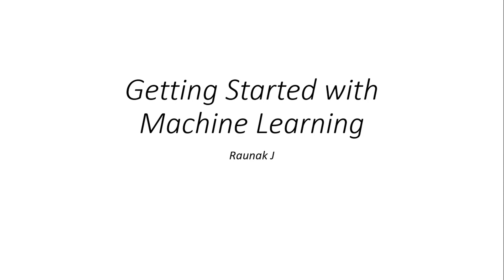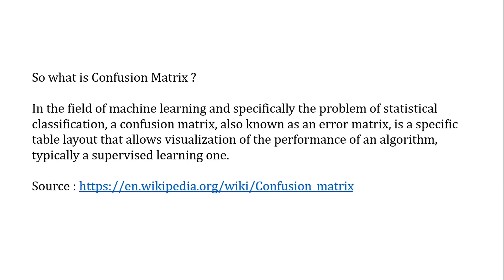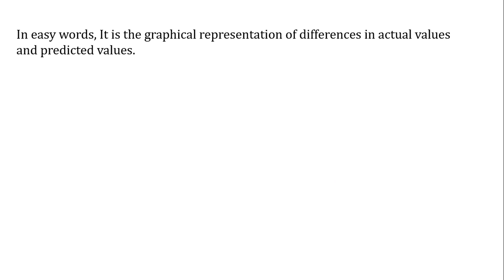Hey everyone, my name is Ronak, back with another video. This is the 13th video in the getting started with machine learning playlist. In this video you are going to learn the confusion matrix. In the field of machine learning, specifically the problem of statistical classification, a confusion matrix, also known as an error matrix, is a specific table layout that allows visualization of the performance of an algorithm, typically a supervised learning one.